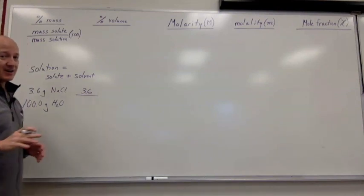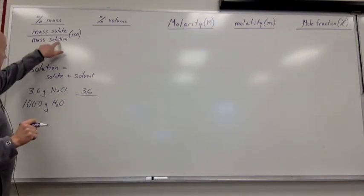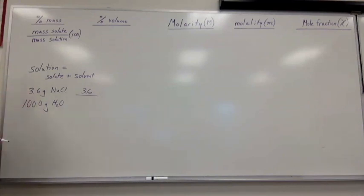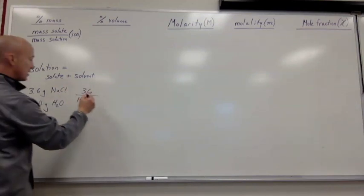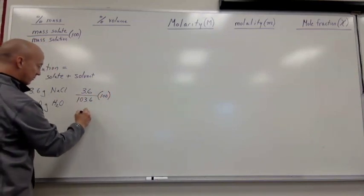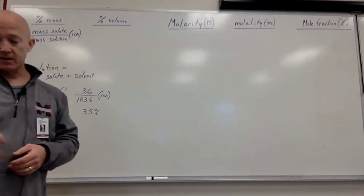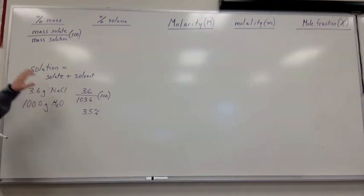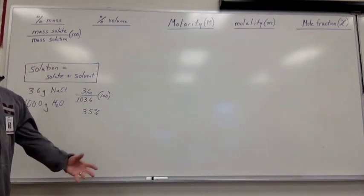Now, if you said 100, you're wrong. You're off. Why? Because remember, the solution is the solute plus the solvent. So we have to add these two together, and when we do, we get 103.6. So we take that ratio, multiply it by 100, and we would get, it's like 3.5%. Okay? So really close, really close to 3.6%, but it's going to make a difference the more solute you have. Right? That's why you want to be careful about this right here, making sure you keep track of that. So there's percent by mass.